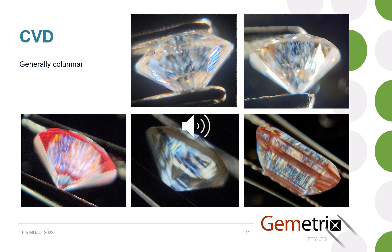When looking at CVD, generally speaking, the pattern tends to be what's described as columnar — sort of lines all parallel to one another, which correspond to the direction of growth of a CVD crystal. This can be applied to both colourless and coloured diamonds, including a couple of pink ones shown here.